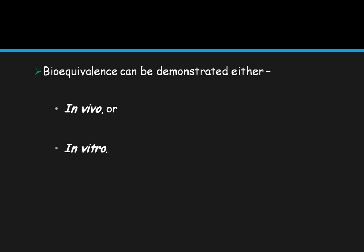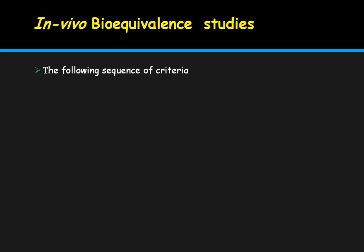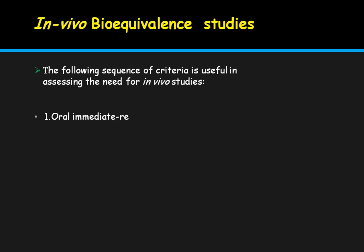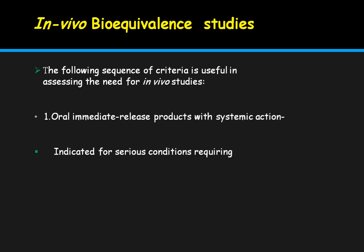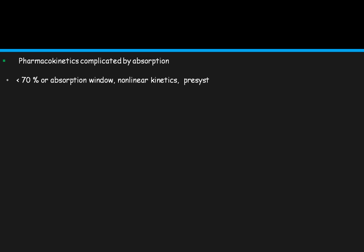Bioequivalence can be demonstrated either in vivo or in vitro. For in vivo bioequivalence studies, the following criteria guide when they must be conducted: oral immediate-release products with systemic action indicated for serious conditions requiring assured response, narrow therapeutic margin, and pharmacokinetics complicated by absorption less than 70%, absorption window, nonlinear kinetics, or pre-systemic elimination greater than 70%.